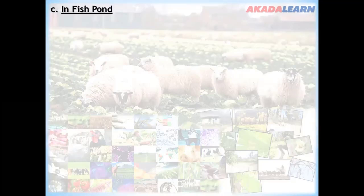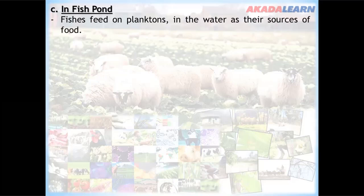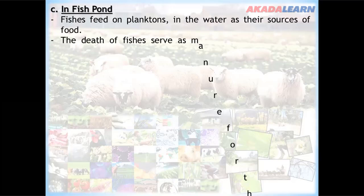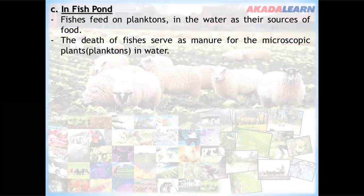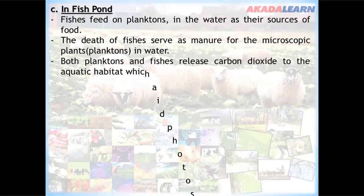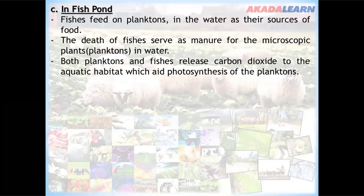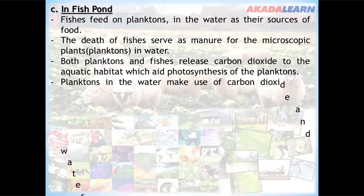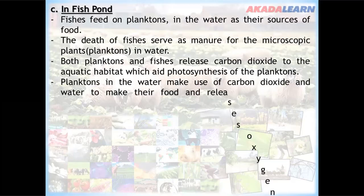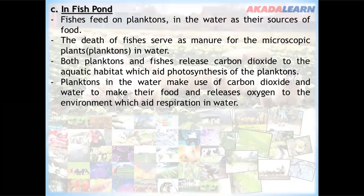In a fish pond, fishes feed on plankton in the water as their source of food. The droppings of fishes serve as manure for the microscopic plants — the plankton — in water. Both plankton and fishes release carbon dioxide to the aquatic habitat, which aids photosynthesis. Plankton use carbon dioxide and water to make their food and release oxygen to the environment, which aids respiration in water.